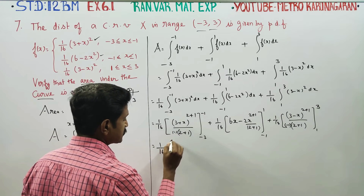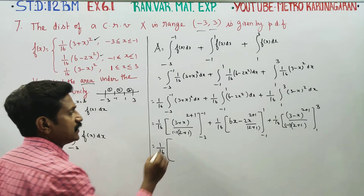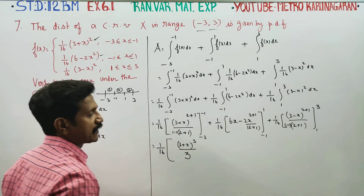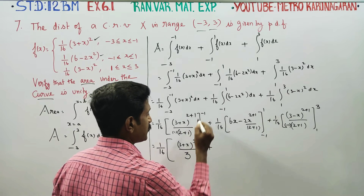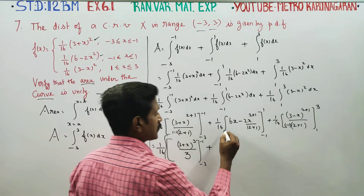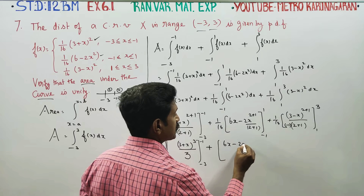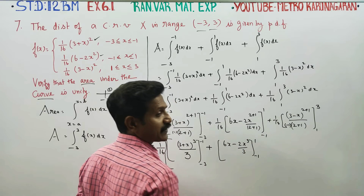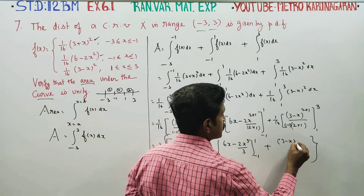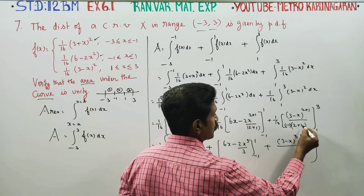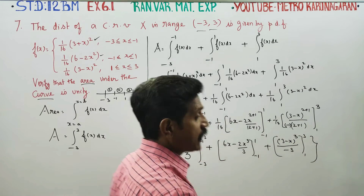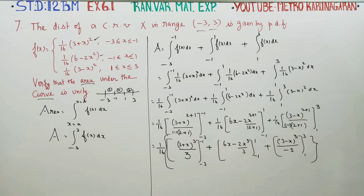Combining with common factor 1/16: the first part gives (3 + x)^3 / 3 evaluated from minus 3 to minus 1. The second part gives 6x minus (2x^3)/3 evaluated from minus 1 to plus 1. The third part gives (3 minus x)^3 divided by minus 3 evaluated from 1 to 3. The goal is to show the answer is unity, i.e., equal to 1.